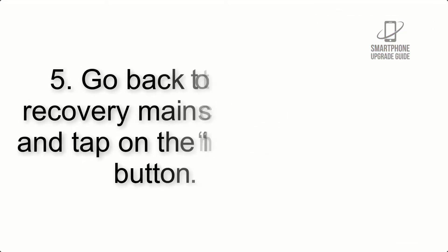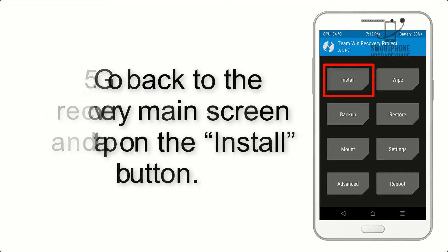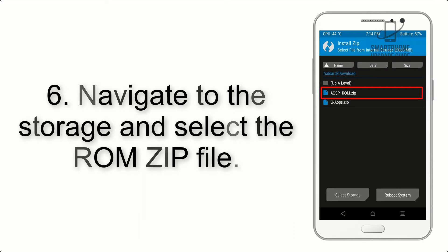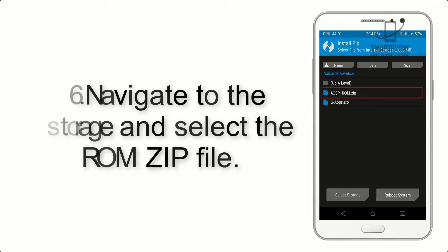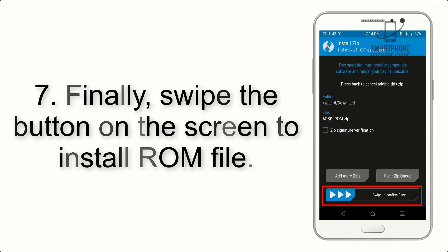Step 5: Go back to the recovery main screen and tap on the Install button. Step 6: Navigate to the storage and select the ROM zip file. Step 7: Finally, swipe the button on the screen to install the ROM file.